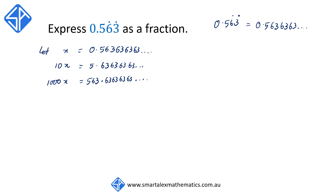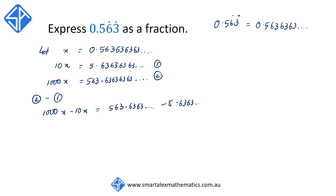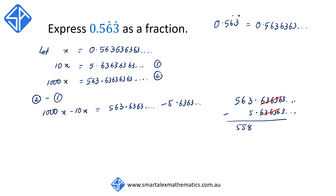Again, all the digits after the decimal point are now identical. Calling equations 1 and 2, we're going to say equation 2 take away equation 1, so that we have 1,000x take away 10x, which is equal to 563.6363... take away 5.6363... Again, if we set this up as a column subtraction, since all the digits after the decimal point are identical, we're able to cancel them out so that we have the answer being equal to 558.